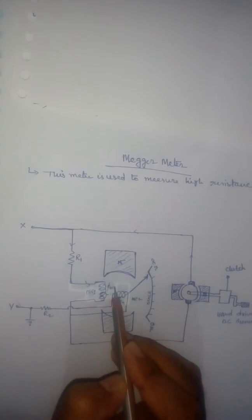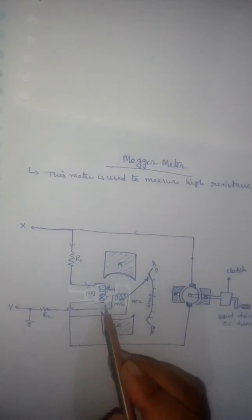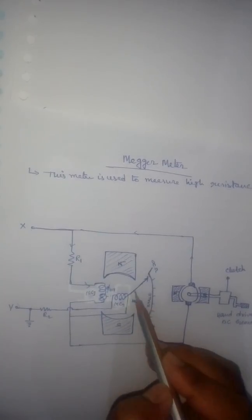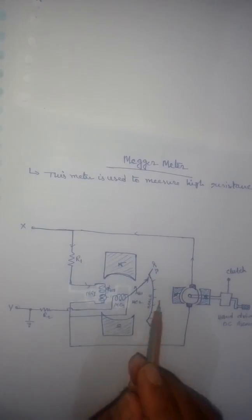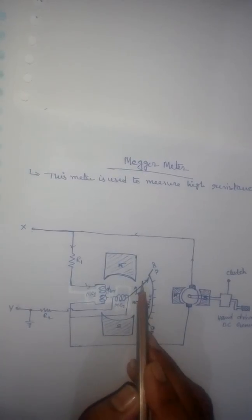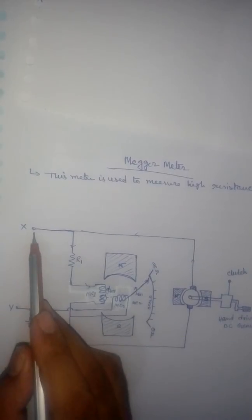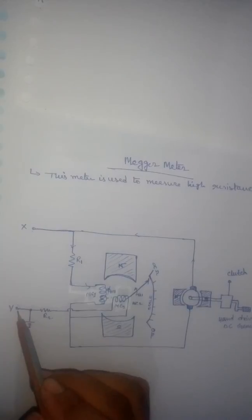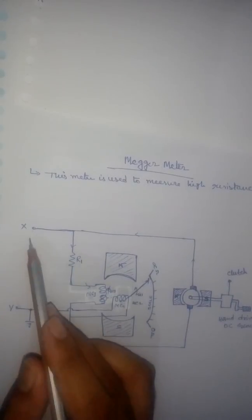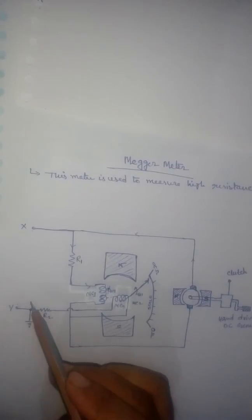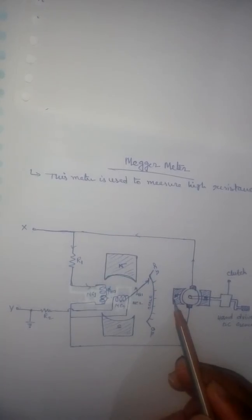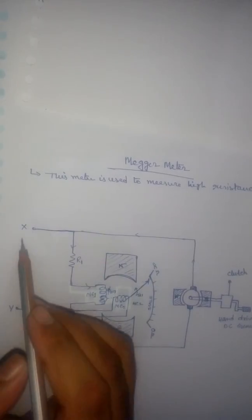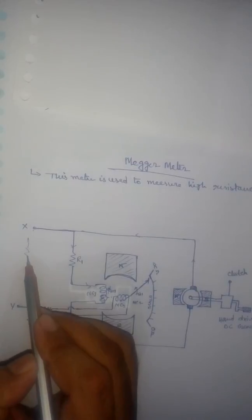The flux of moving coil 1, phi-MC1, will create a deflecting torque TD1 on the pointer in one direction, and the pointer will move towards infinity ohms. Since nothing is connected and the X-Y leads are open, this is an open circuit, meaning infinite resistance. So the pointer will show infinite ohm resistance.